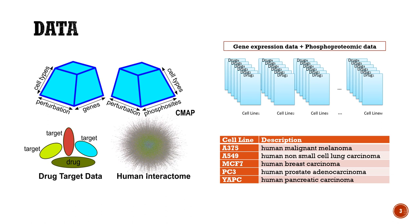We used the P100 dataset of the Connectivity Map Resource. The P100 dataset includes phosphorylation and transcription data for five cancer cell lines and 89 small molecule drugs with a controlled treatment. We used drug target data of these small molecules and we also used IREF-WEB version 13 human interactome in network reconstruction studies.